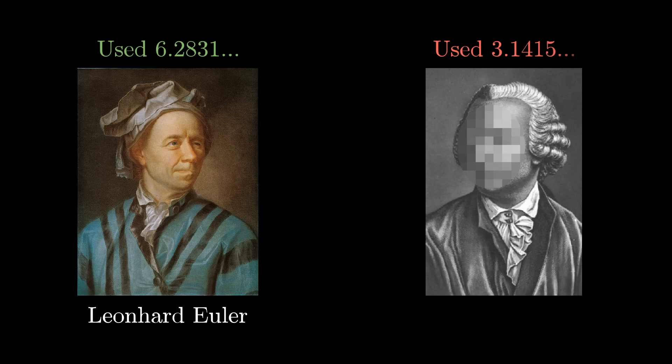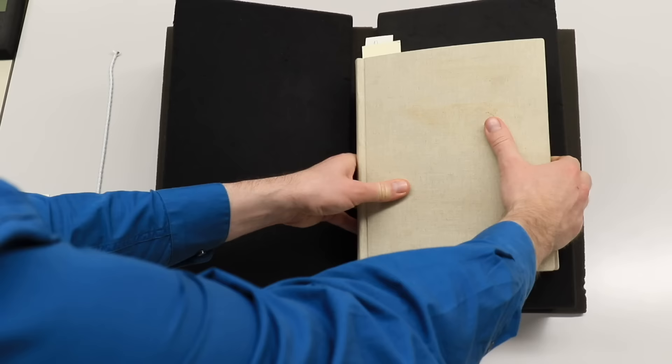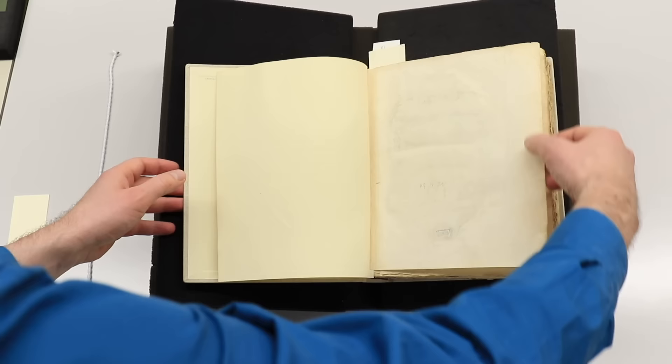So was it the case that Euler, genius of the day, was more notationally enlightened than the rest of the world, fighting the good fight for 6.28? And if so, who's the villain of our story, pushing the 3.1415 constant shoved in front of most students today?